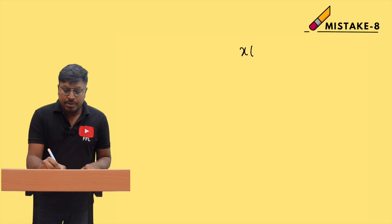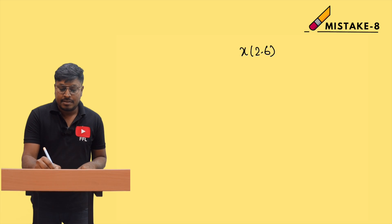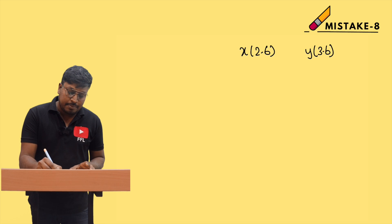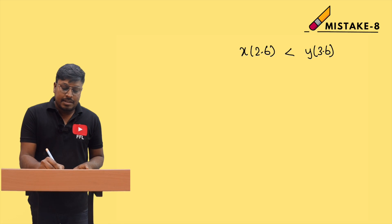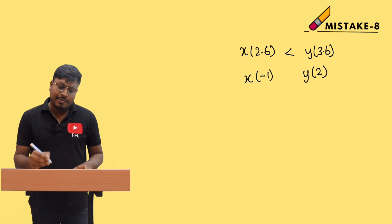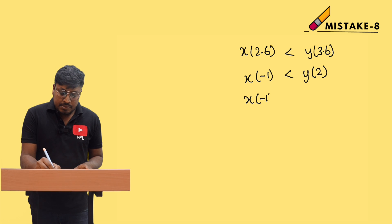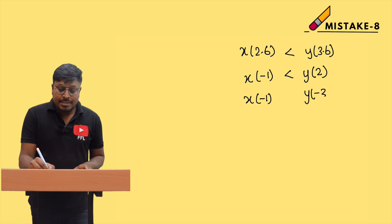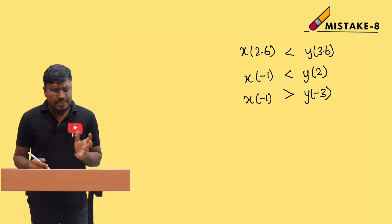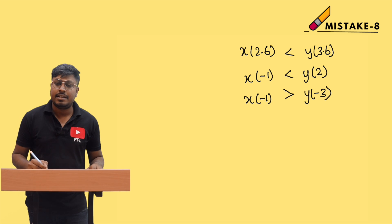For example, if x = 2.6 and y = 3.6, we can say 3.6 is greater than. Similarly, if x = −1 and y = 2, the positive value is greater than. And if x = −1 and y = −3, then −1 is greater than −3. For decimal, positive, and negative values like these, I don't see students making many mistakes.